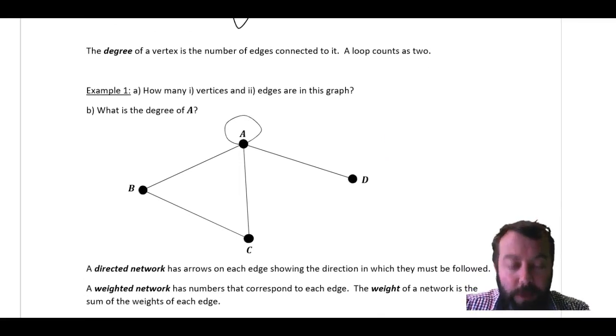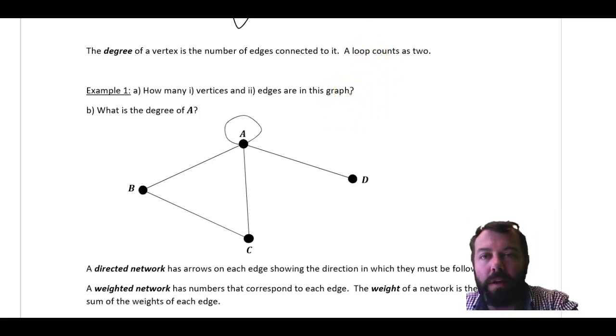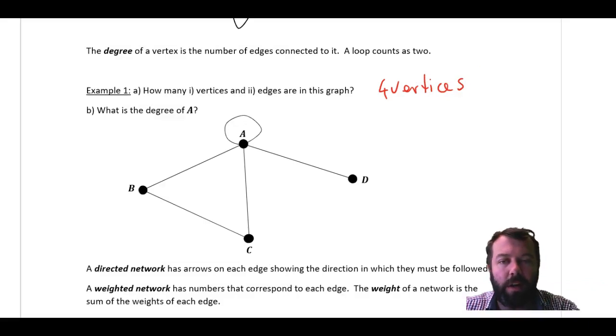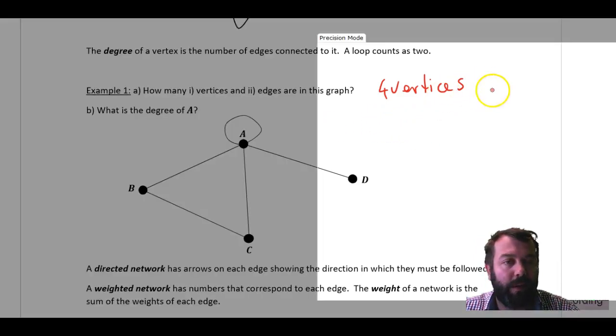So here in our first example there's a question. I have a network graph here. How many vertices are there? And how many edges? So first of all, for A, let's write these things down. Okay, how many vertices? Well, there are four vertices. A, B, C, D. And how many edges? Well, I've got, let's see, one, two, three, four, and this is another one here, is a fifth. So five edges.